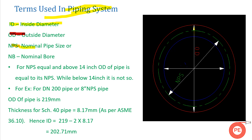With the help of nominal pipe size or nominal bore, we designate pipes in the market. When we buy a pipe, we don't say we need a pipe of OD 219 mm; instead, we say we need a pipe of DN 200, or in the NPS inch system, we say we require an 8-inch pipe. For large pipe sizes above 14 inch, the NPS lies between OD and ID, but for small pipes like 1 inch, 1.5 inch, or 2 inch, NPS can even fall outside that range.